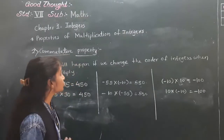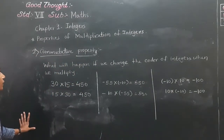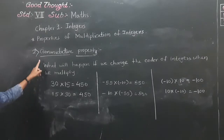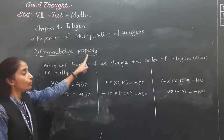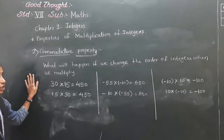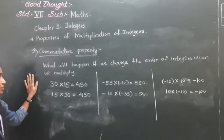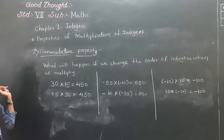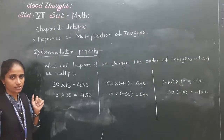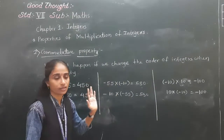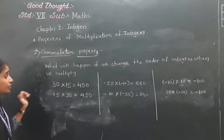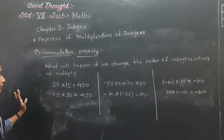Let's move towards the next property: commutative property. In this property, what will happen if we change the order of integers when we multiply? We'll see some examples given here — what will happen if we change the order of the given numbers?